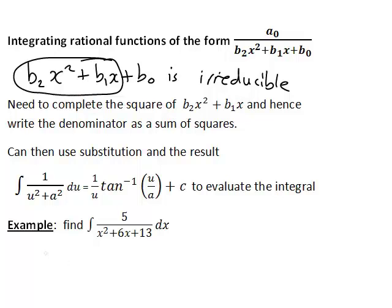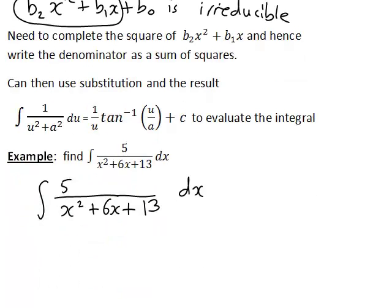The example we are going to look at is evaluating the integral of 5 divided by x² plus 6x plus 13 with respect to x. This is the same as the integral of 5 multiplied by 1 divided by x² plus 6x plus 13 dx. So that constant 5 can just be taken outside the integral sign.